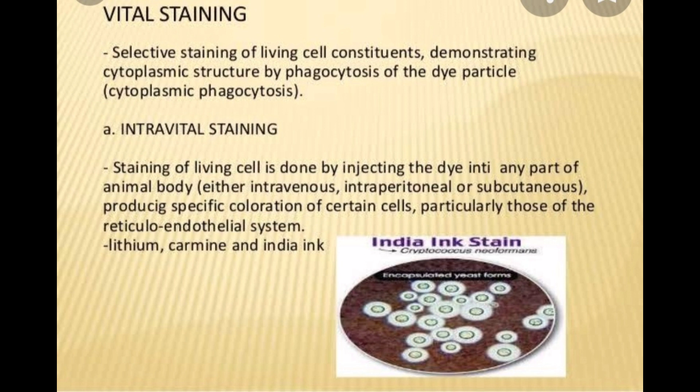Under vital staining, we have intravital staining of living cells. This can be done by injecting the dye into any part of the animal body — either intravenous, intraperitoneal, or subcutaneous — producing specific coloration of certain cells, particularly those of the reticuloendothelial system. Common dyes used are lithium carmine and India ink.